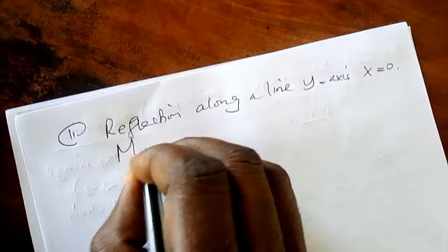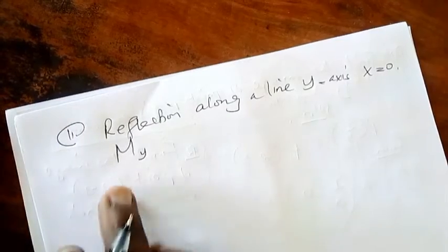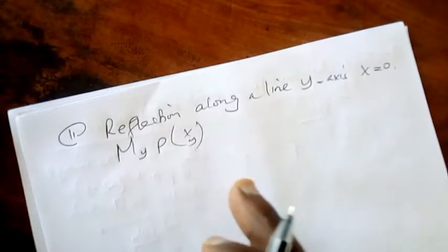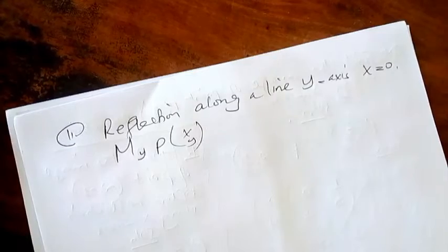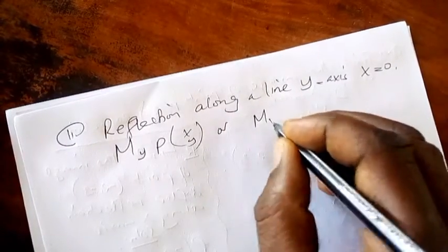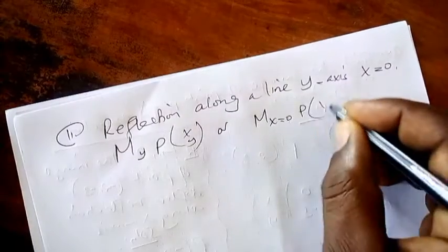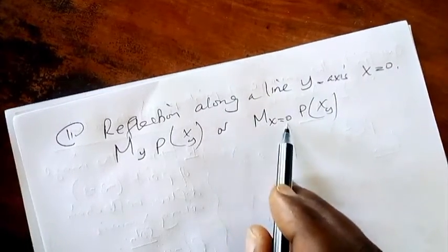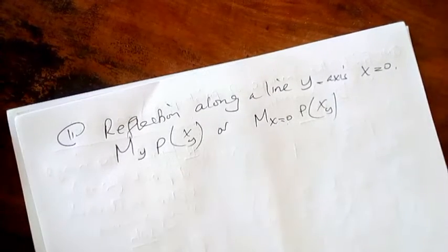Y-axis where x is equal to 0. The general formula or general symbol that shows reflection along the line y-axis is M_y. When you write M_y, it means reflection along y-axis. Point is (x, y). This point becomes reflection along the y-axis. Or you can write M x equal to 0 for P(x, y). When you write M_y for reflection along x equals 0, it means y-axis, right?